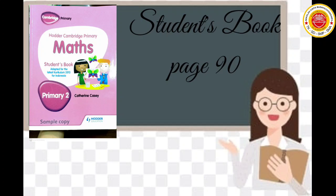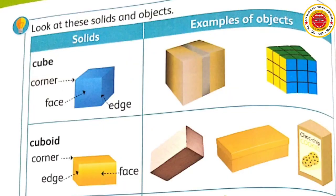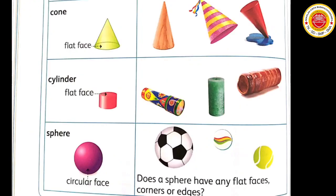Now students, please pay your attention at page 90. Inilah contoh-contoh benda-benda yang berbentuk bangun ruang yang ada di sekitarmu. Benda yang berbentuk kubus atau cube contohnya kotak paket dan kubus rubik yang biasanya berwarna-warni. Lalu ada juga benda yang berbentuk balok, contohnya balok kayu, kotak sepatu, dan kotak kemasan suatu produk. Sekarang kita ke bentuk yang lain yaitu kerucut. Siapa yang di sini suka makan es krim? Alas es krim yang kalian makan itu berbentuk kerucut, makanya disebut es krim cone. Bentuk kerucut yang lain yaitu topi ulang tahun dan tempat pensil.